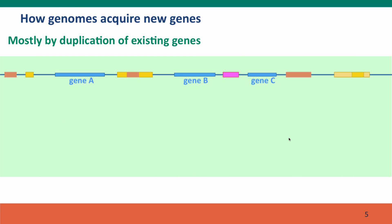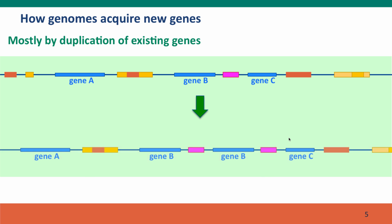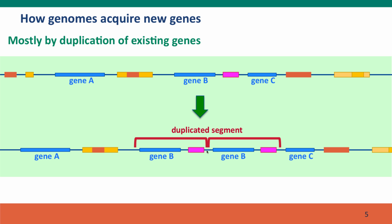Most genes arise as duplications of an existing gene. Here's a simple example — just like the duplication scenario described a few lectures ago, where a segment of the genome has become duplicated, in this case forming a tandem duplication where the two copies are side by side. But the duplication could also create a second copy somewhere else in the genome.